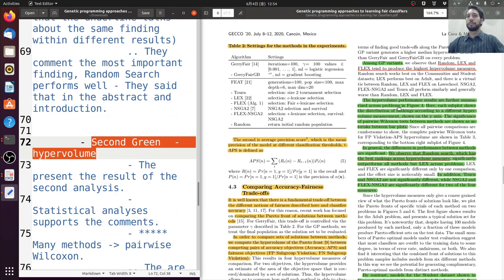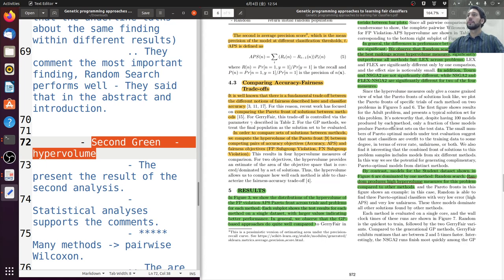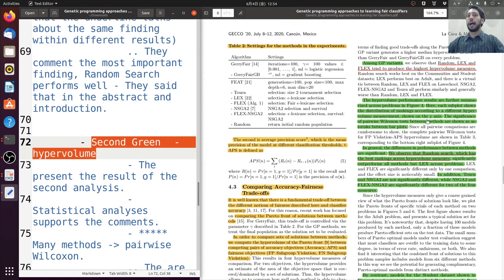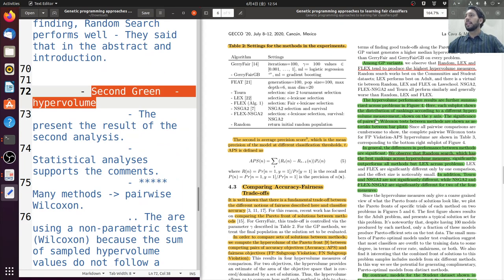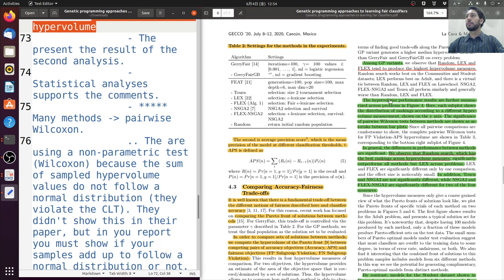When we move to the second report here, they present the statistical analysis results showing that more information is on figure 4. If you move to figure 4, you're going to get more information. You're going to have the hyper volume performance and also the statistical information. They used the test to support their comments. And they used the Wilcox test in a prior-wise manner. So they are using the non-parametric test, the Wilcox test, because the hyper volume values do not follow a normal distribution. They violate the CLT. So we cannot use parametric test. We have to use non-parametric as the Wilcox test.